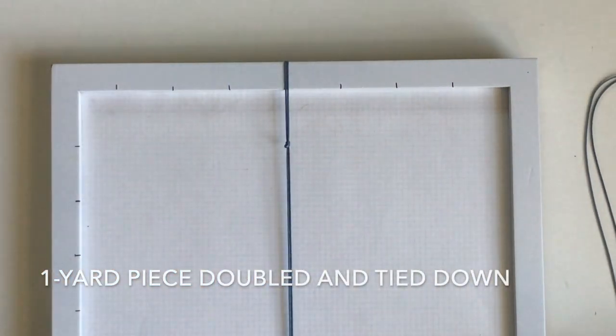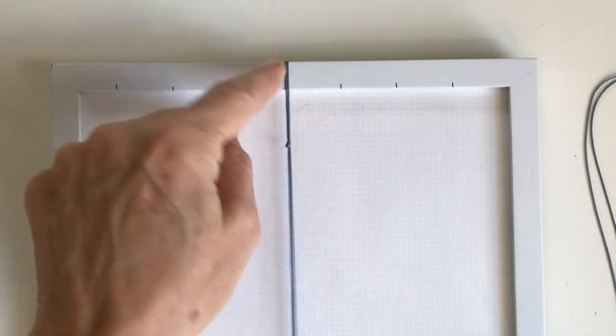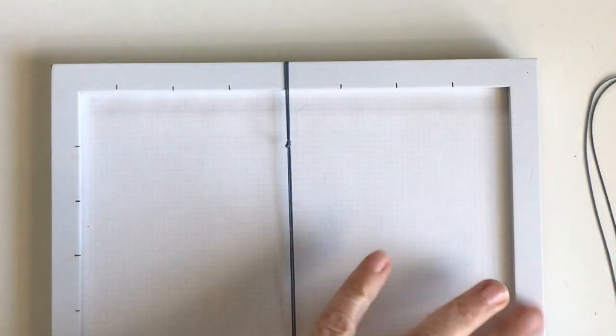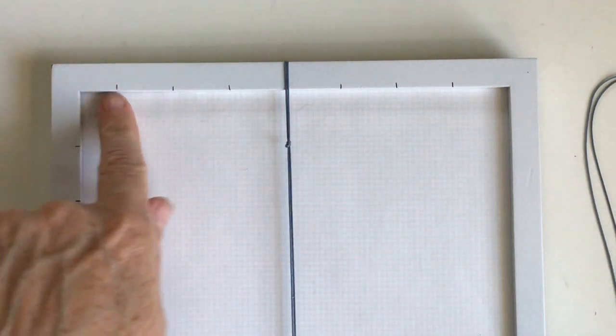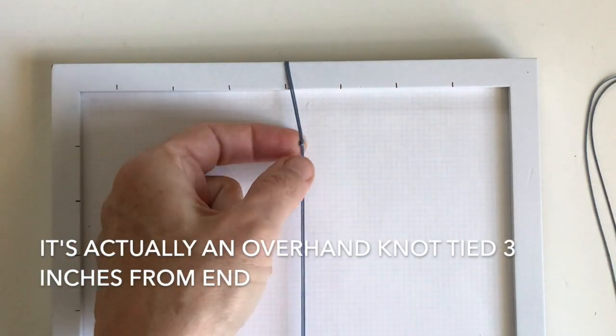I've got my one yard length of cord doubled over and tied onto a board. This is just an old picture frame that I've spray painted and put some measuring marks on. And I've got a half knot right here.